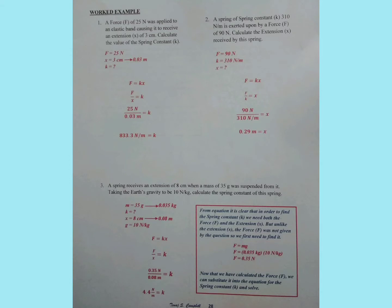Let us take a look at some worked examples. Question 1 reads that a force F of 25 Newtons was applied to an elastic band, causing it to receive an extension X of 3 centimeters. Calculate the value of the spring constant K. We list the values — F is equal to 25 Newtons, X is equal to 3 centimeters, and K is the unknown.